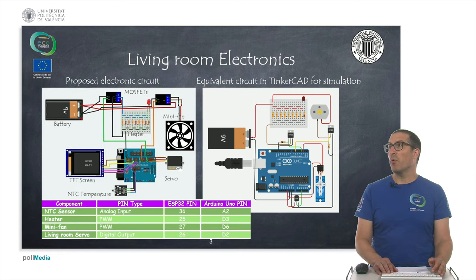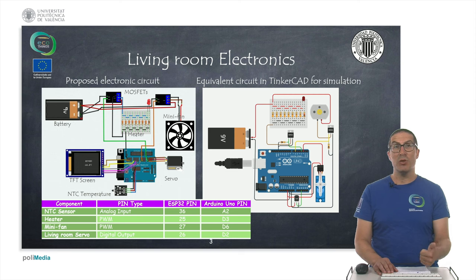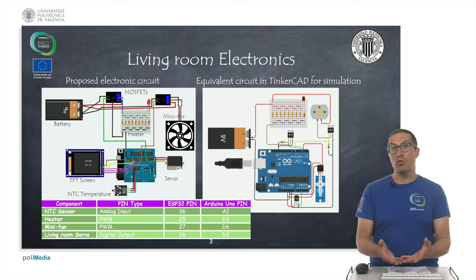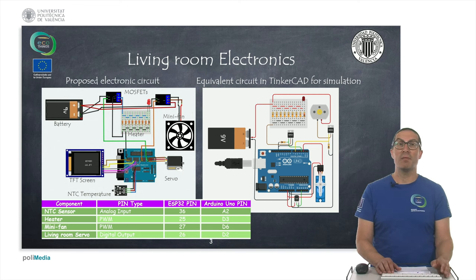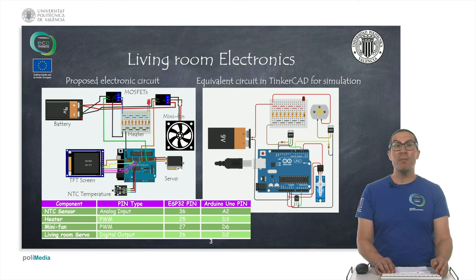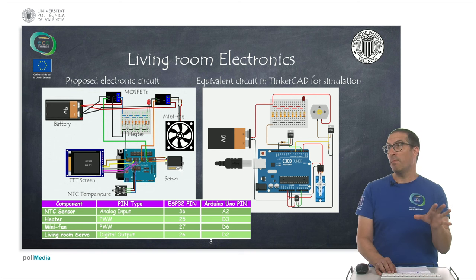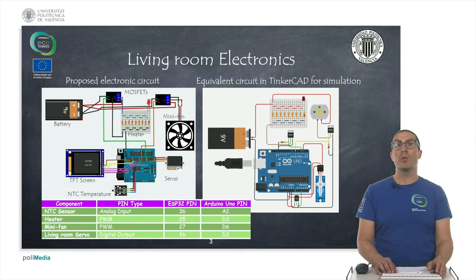These are the proposed electronics for the living room. We have a temperature sensor — the NTC sensor, which is a thermistor connected to pin A2. Then we have a heater and a mini fan: the heater provides heat and the mini fan injects air from the ground of the passive house. They are connected to PWM pins D3 and D6. We also have a living room servo that controls the window, connected to pin D2. The proposed circuit is shown in a Fritzing diagram and an equivalent circuit in Tinkercad for simulations.